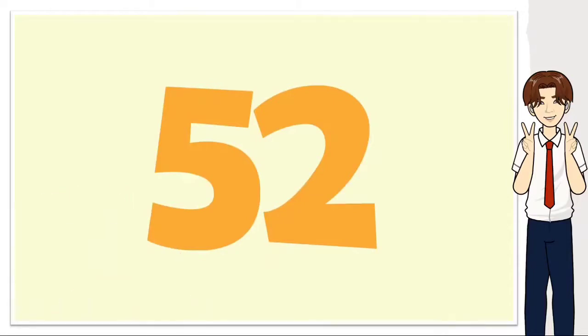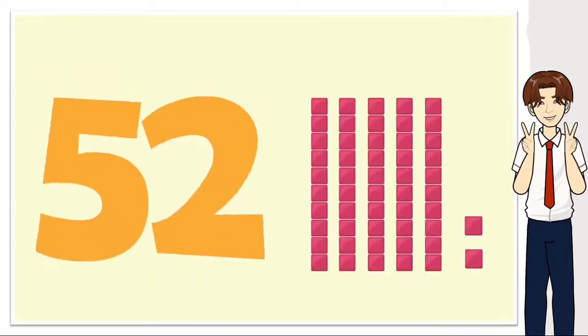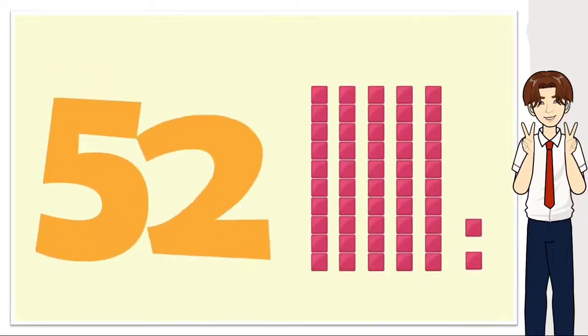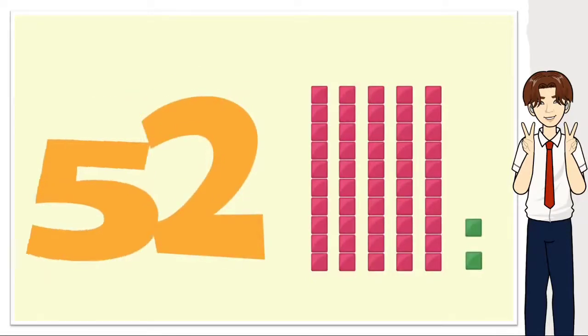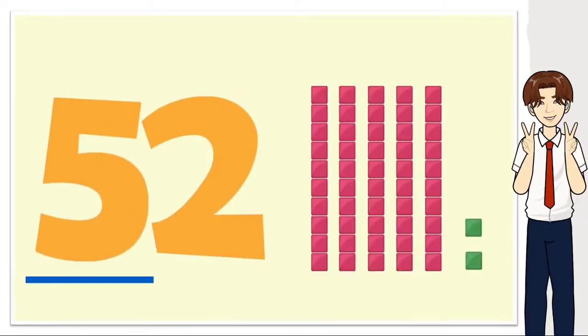Okay, here's the answer. The two is in the ones place, so it's just worth two. The five is in the tens place, so we'll have to count by tens five times.